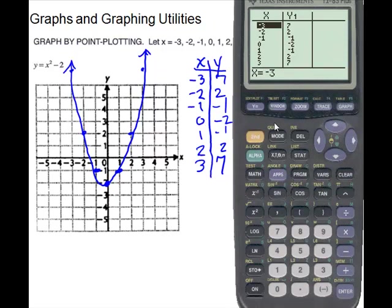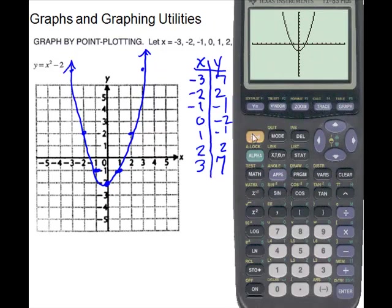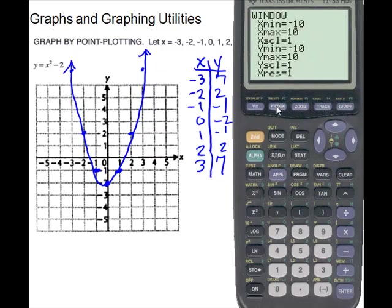Let's look at the window settings. Going back to our graph — for the window, the minimum x value is negative 10 and maximum is 10, with scale of 1, so each tick mark represents 1. The y minimum is negative 10, y max is 10, and y scale is 1. This is our standard window.